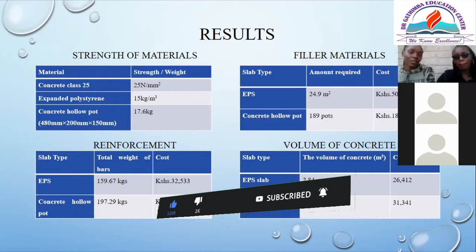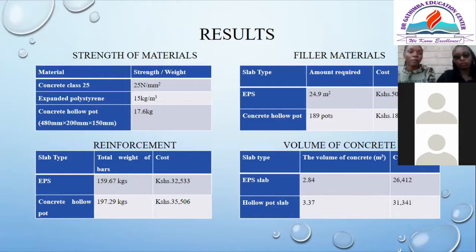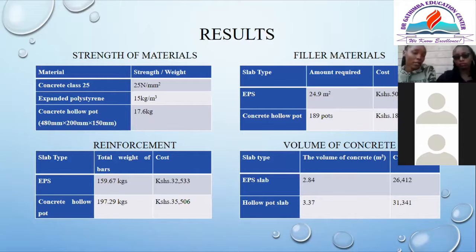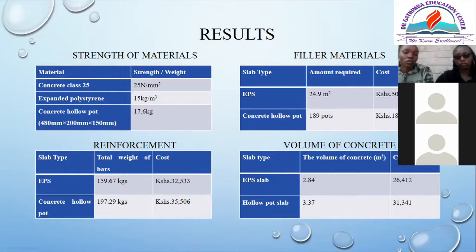The results obtained: concrete class 25 strength was 25 N per square millimeter. Expanded polystyrene had a density of 15 kg per cubic meter. The concrete hollow pot size 80 by 250 mm had a mass of 17.6 kg. For the reinforcement results, the total weight of bars for the EPS slab was 159 kg, and its total cost was approximately 32,500 shillings.